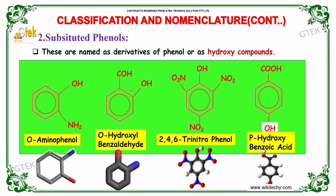Let us now study about substituted Phenols. These are named as derivatives of Phenols or as hydroxy compounds. The first diagram here shows Orthoaminophenol. The second one is Orthohydroxybenzaldehyde. The third one can be named as 2,4,6-Trinitrophenol, also named as Orthometapara Trinitrophenol. The final product shown here is Parahydroxybenzaldehyde.